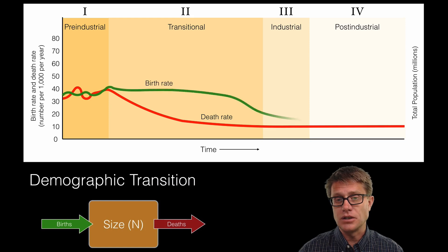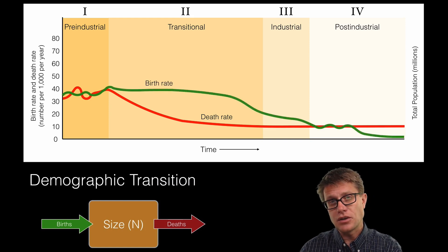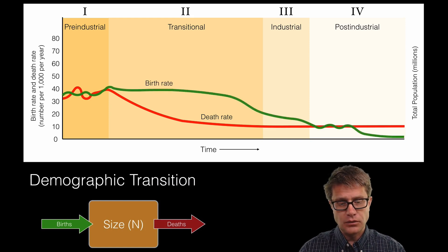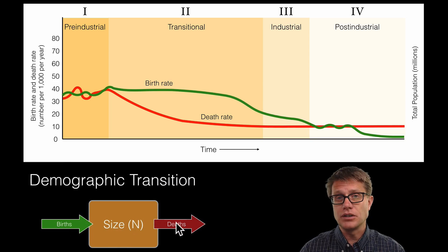But it shifted to the right a little bit. And so if we look back at this model of size being increased by births and decreased by deaths, what do you think is going to happen pre-industrial?